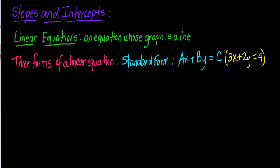There are three forms of a linear equation. The first form is standard form — it's written as A times X plus B times Y equals C, where A and B are coefficients and C is a constant. Here's an example: there's always a number in front of X, always a number in front of Y, and it equals a constant. Notice that X has an exponent of one, which tells you the graph will be a line. If the exponent is different than one, the graph will not be a line.